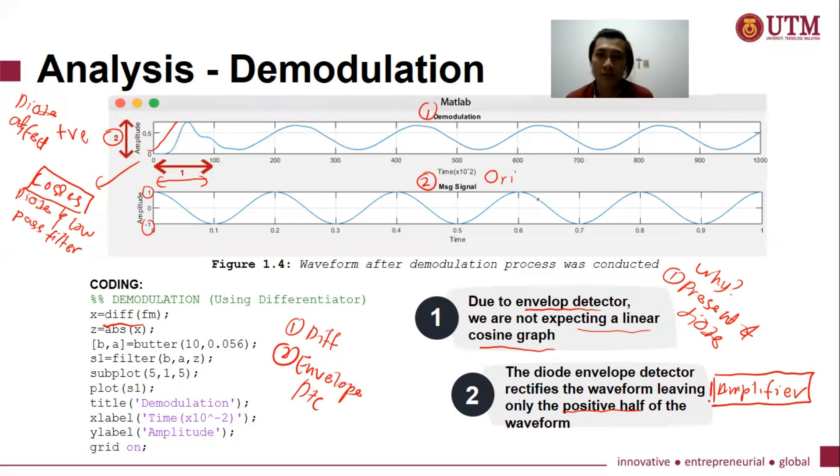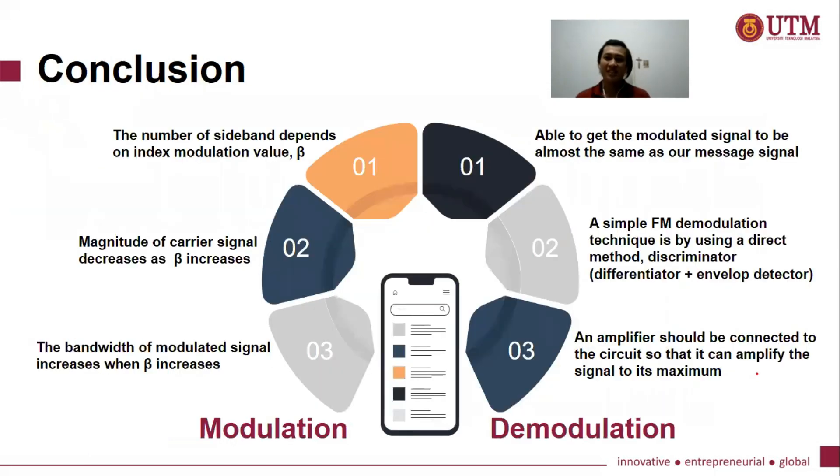Okay, let's move on. So before we end, I want to conclude for modulation. We can see that the number of sideband depend on the index modulation value, or that we call as beta. And when the magnitude of the carrier signal decrease, the beta will increase. Lastly, we can conclude that the bandwidth of the modulated signal increase when beta is increased.